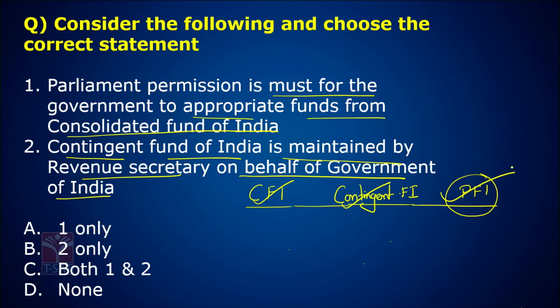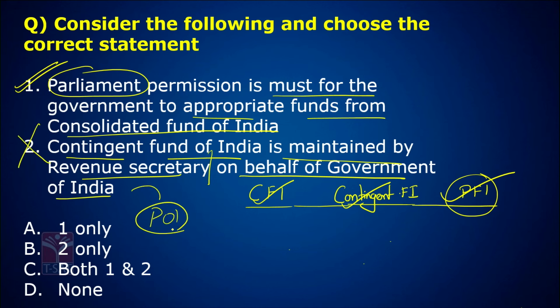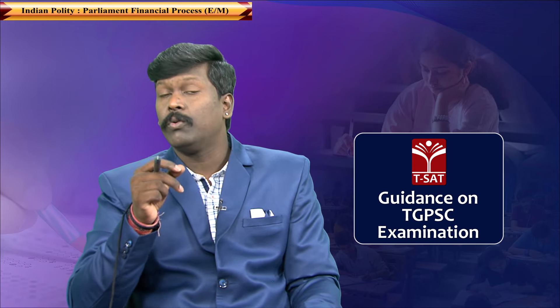Looking at the question: Parliament permission is a must for the government to appropriate funds from the consolidated fund of India — absolutely correct. Contingent fund of India is maintained by the revenue secretary — correct — but on behalf of the President of India, not the government of India. The President has authority to authorize funds from the contingent fund. So the answer is A.